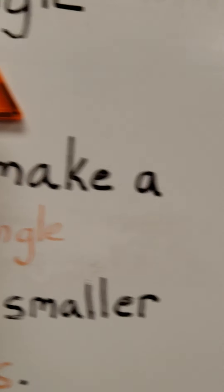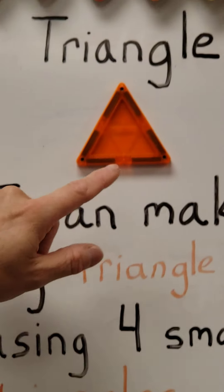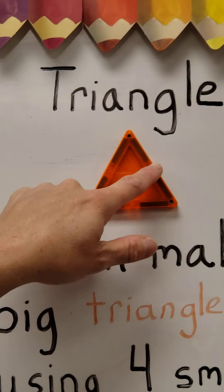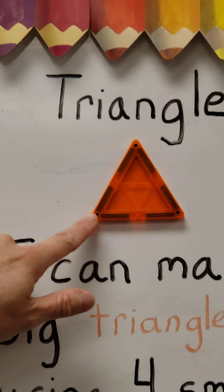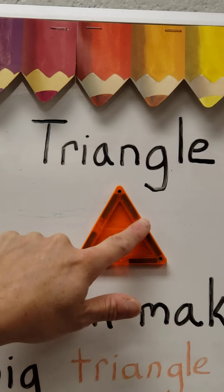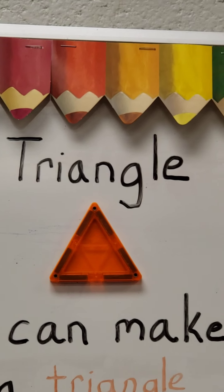Our next shape is a triangle. And a triangle has three sides and three vertices. And again, those are the points where the sides meet.